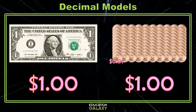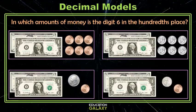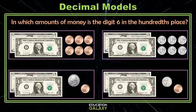Let's look at an example. Here we have different amounts of money, and we want to know in which amount is the six in the hundredths place. Okay. So, let's look at this first option. I have six dollars, so that's my whole number. And then I have six pennies, which is six cents, and that is written like this. Six dollars and six cents. We know that this is the tenths place, and this is the hundredths place. So, in this one, yes, the six is in the hundredths place.